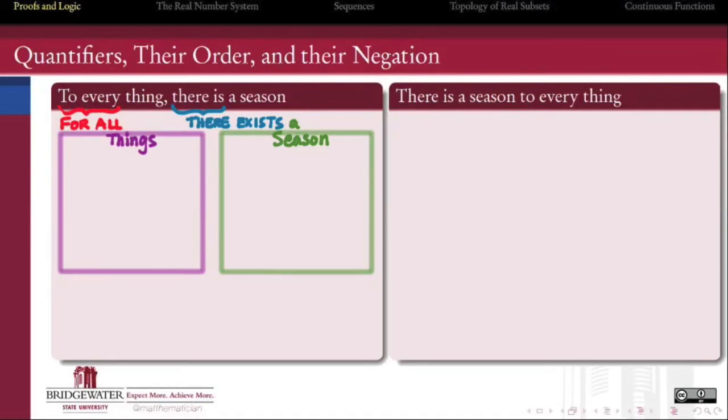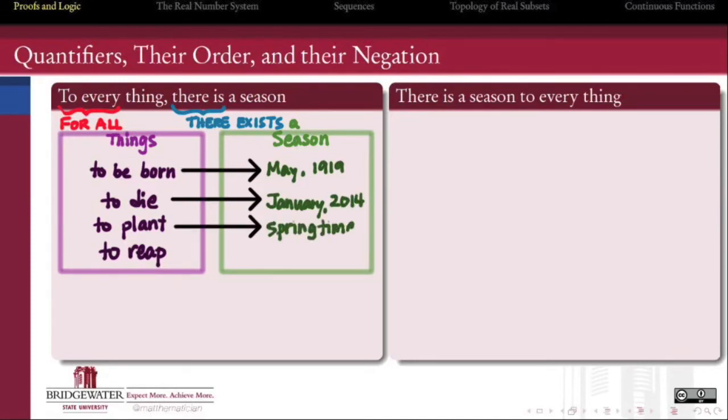And the order in which these appear matters. Placing for all first brings all possible things onto the table, and then it asserts the existence of a season for each one.